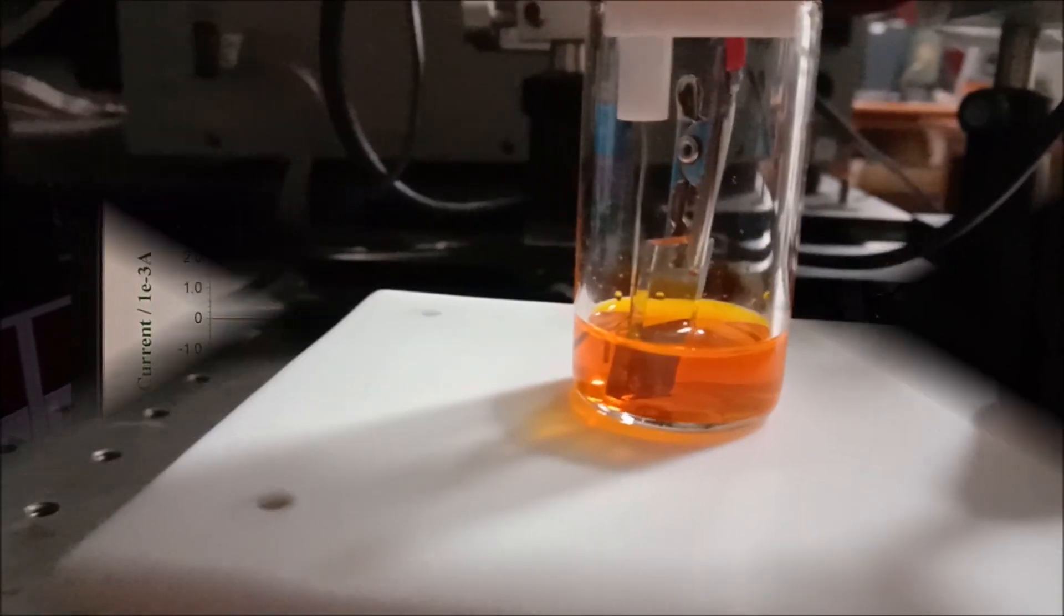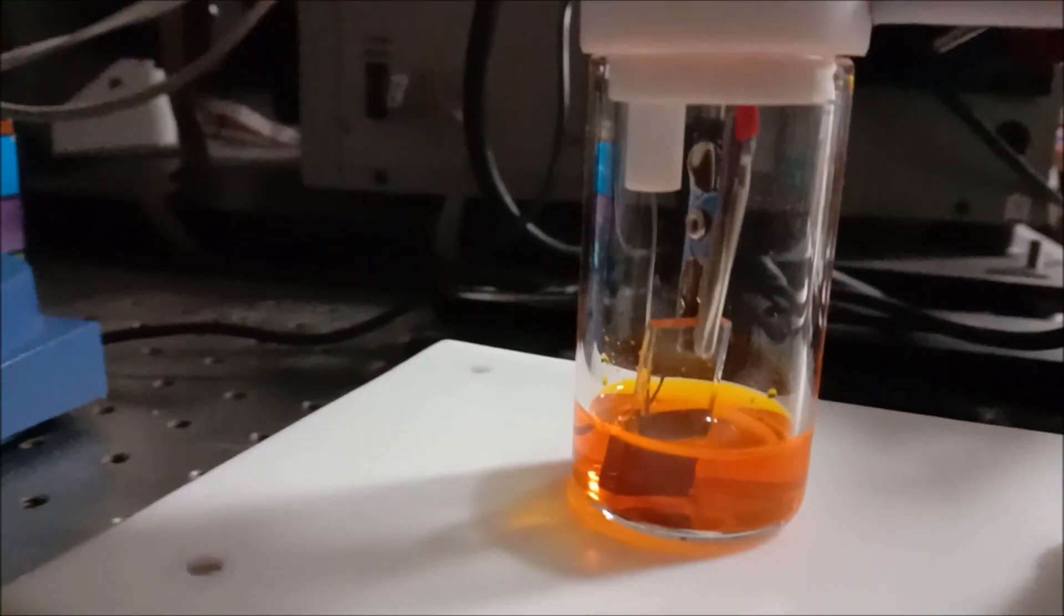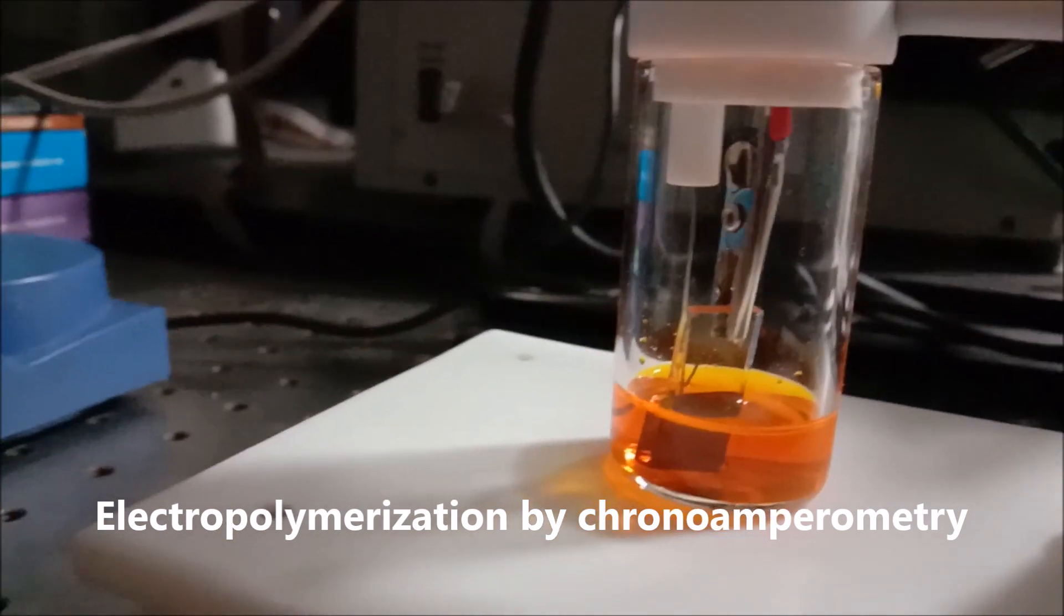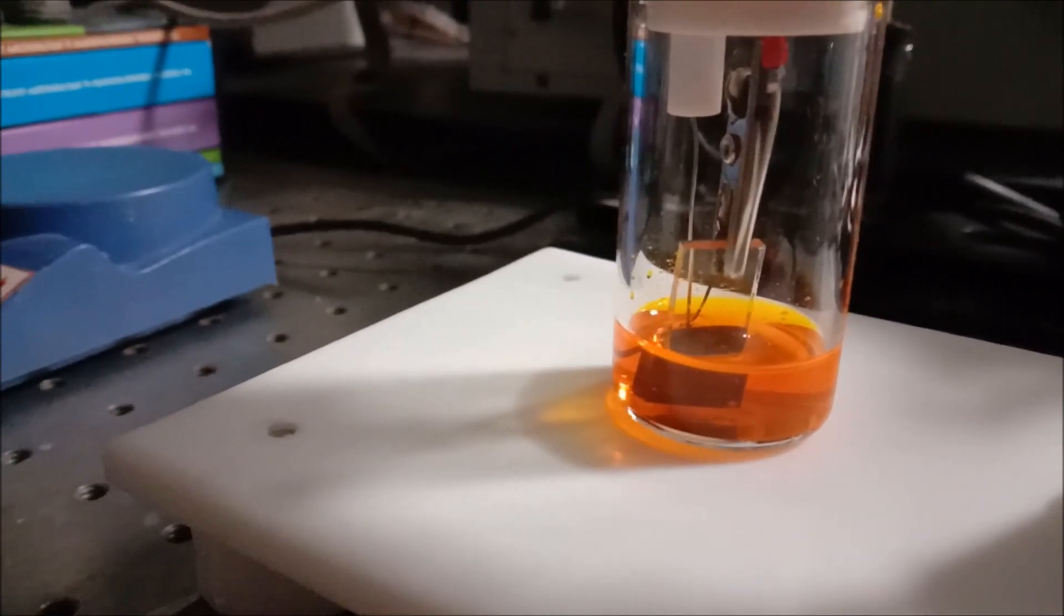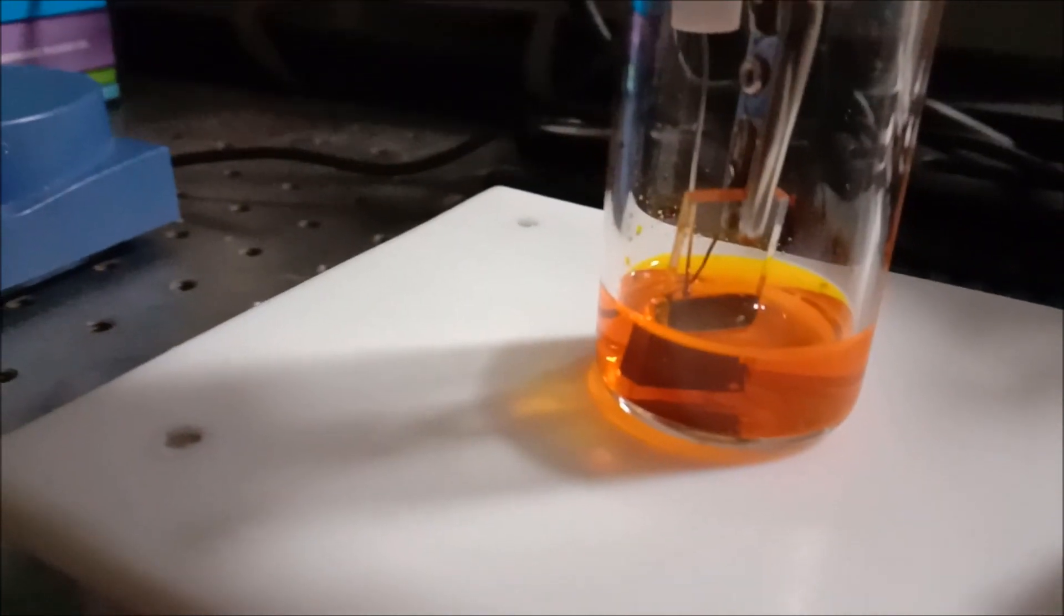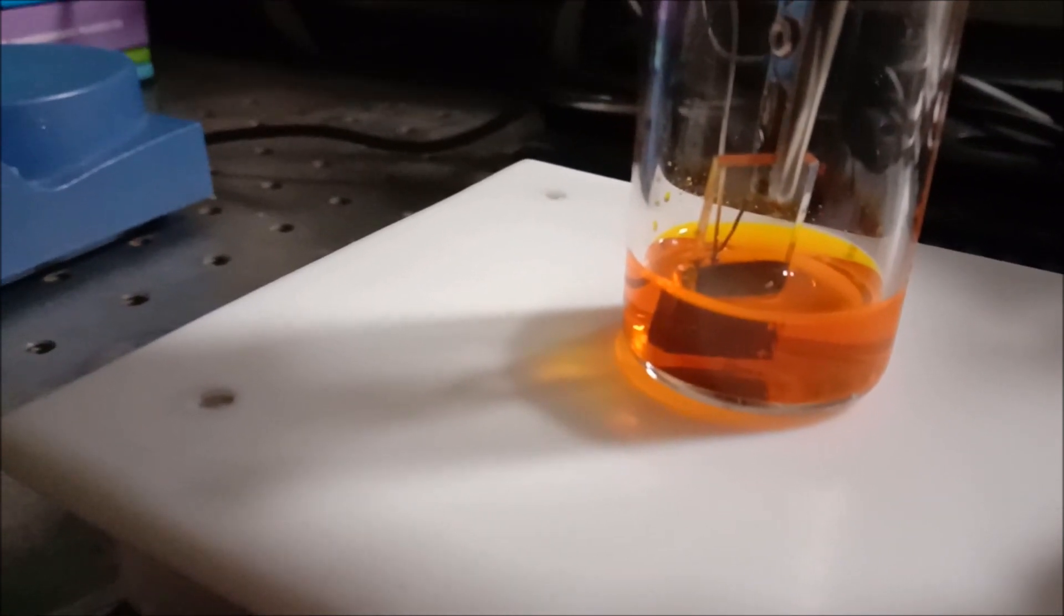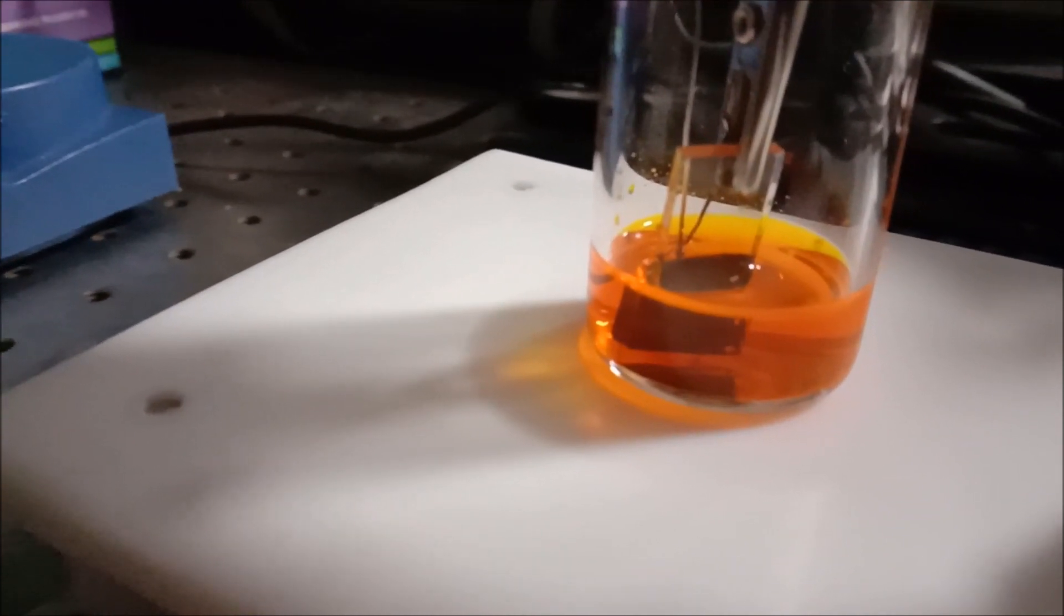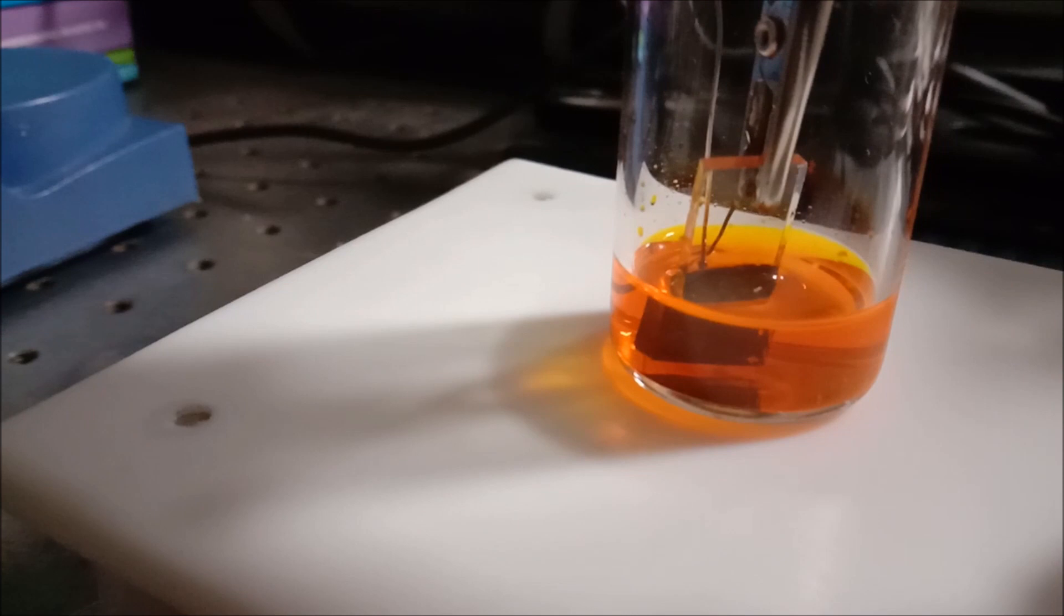Now we are performing the electropolymerization using chronoamperometry, setting a particular voltage determined from the LSB. Now you can see that film formation is uniform at that particular voltage. We have chosen that particular voltage at which we earlier obtained that extreme darkness of the deposited material.